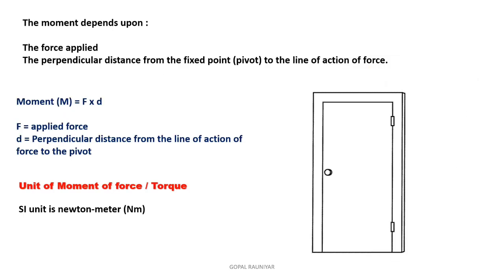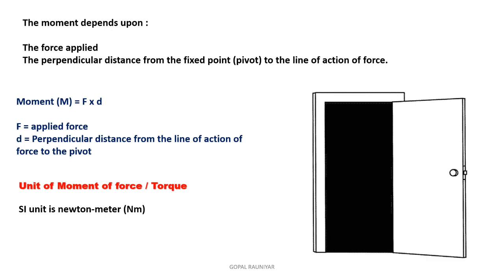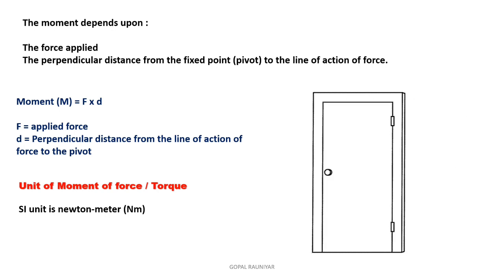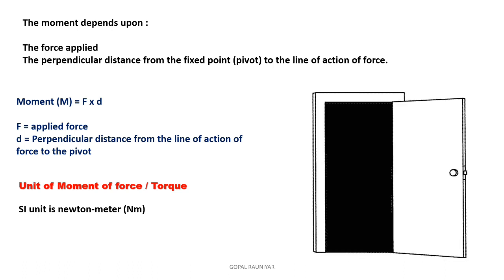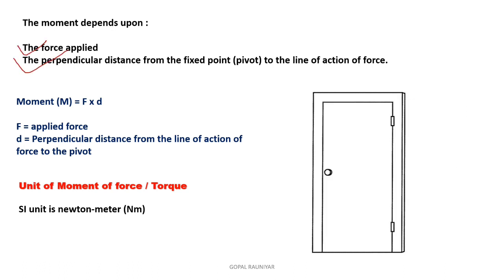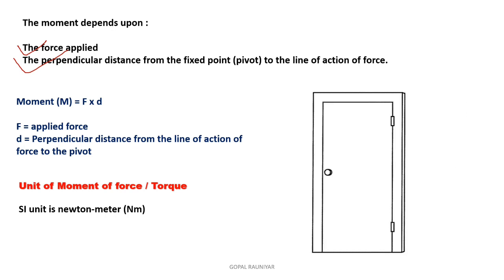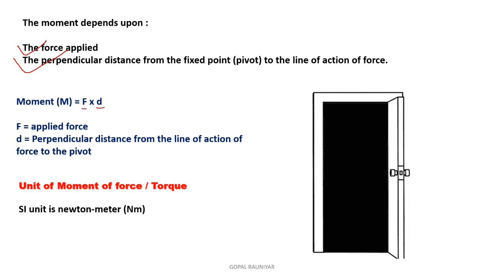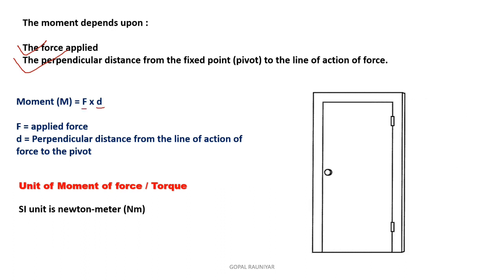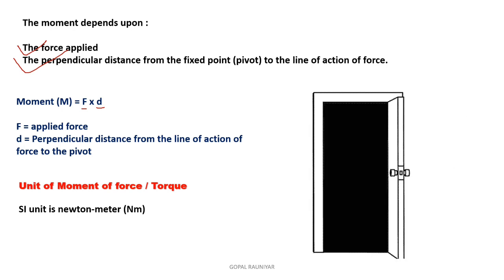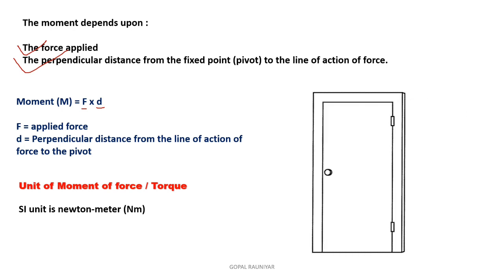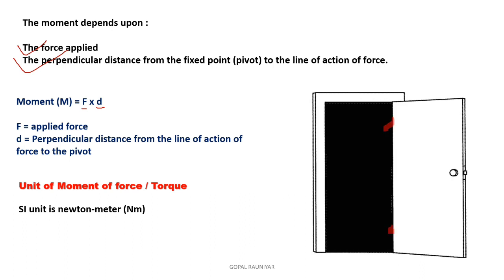The moment of force — torque or turning effect of force — depends on two factors: the force applied, and the perpendicular distance from the fixed point to the line of action of force. The formula is: Moment = Force × Distance, where distance is the perpendicular distance from the line of action of force to the pivoted point. For example, on a door, the more the distance from the hinges to where force is applied, the more will be the moment.